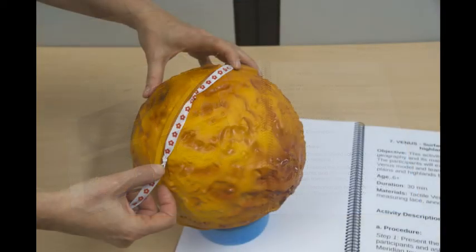Activity 7 shows the plains and highlands of the planet, which are two of its main geographical characteristics. For this activity, you need the measuring lace and optionally the annotated map.